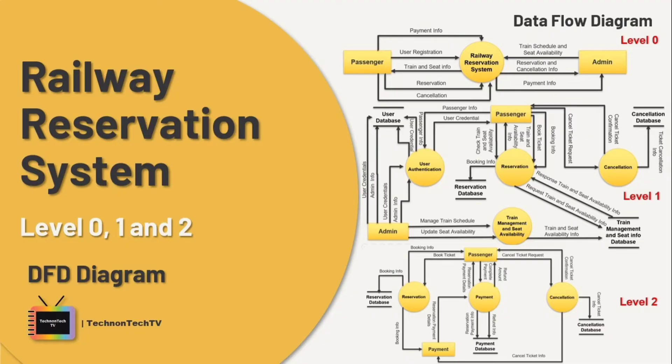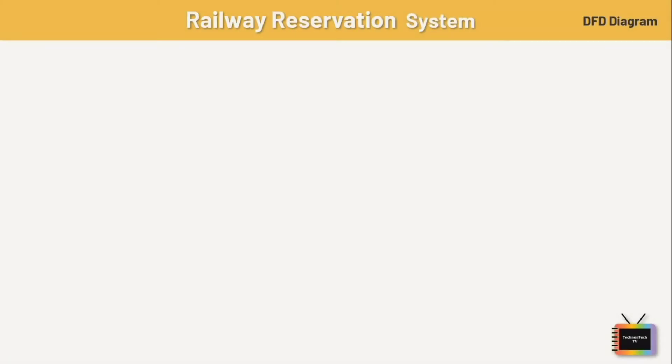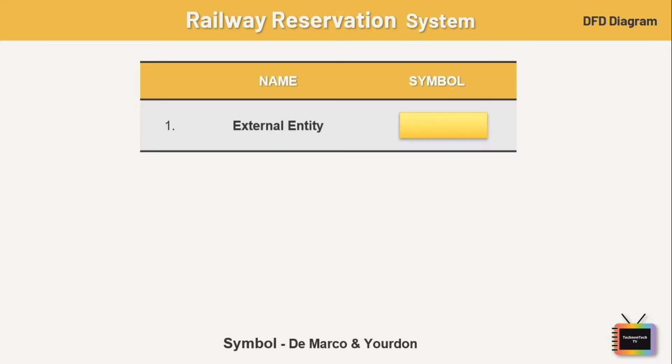This DFD diagram for the railway reservation system uses defined symbols that represent the system's processes. There are several notations for displaying a data flow diagram. I am using notations described by De Marco and Jordan. First is external entities — external entities are the entry and exit points for data entering and leaving the system.